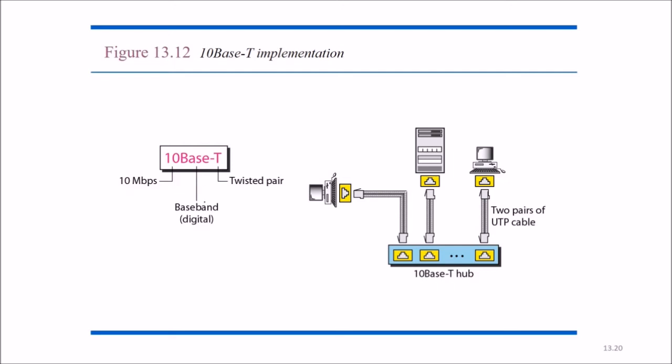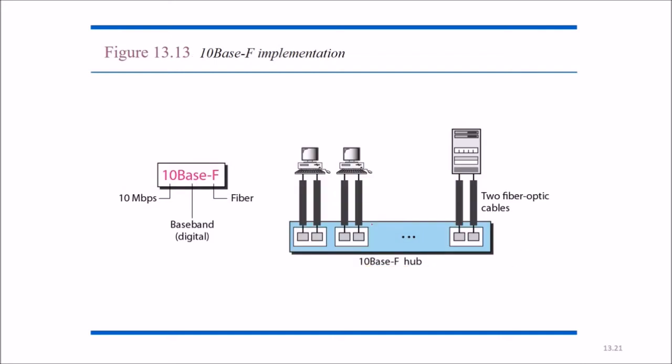This is 10BaseT, so you have 10 Mbps baseband signal, digital, and T means twisted pair. This is 10BaseT hub. Two pairs of UTP cables are there for T, that is twisted pair. So you can see these are the twisted pairs, and you will see like this in the form of helix, helical shape.